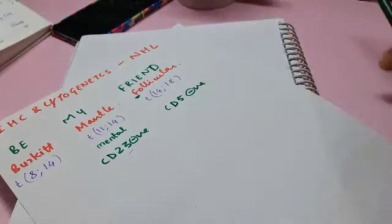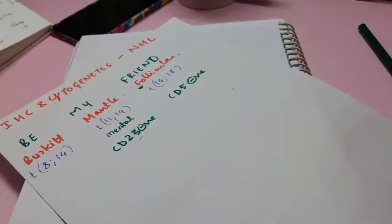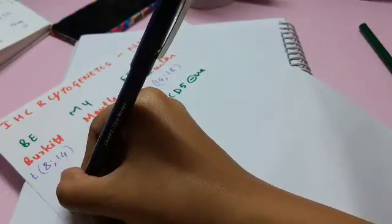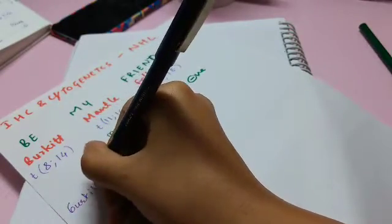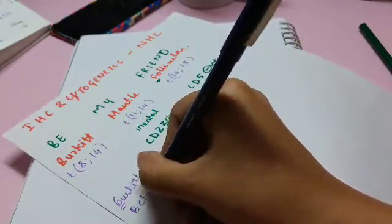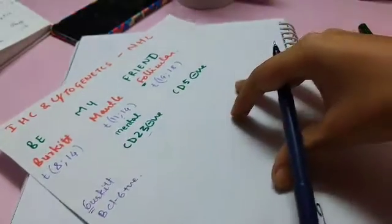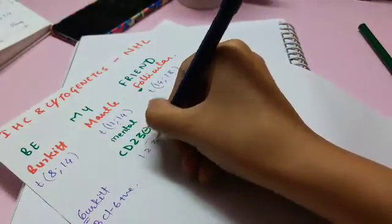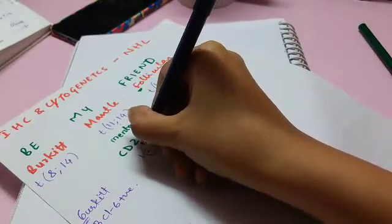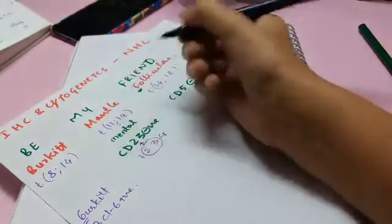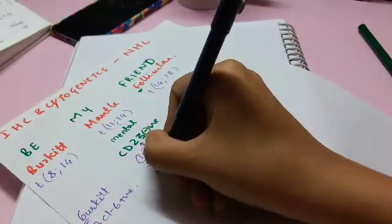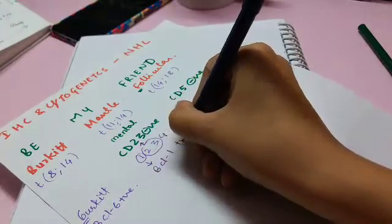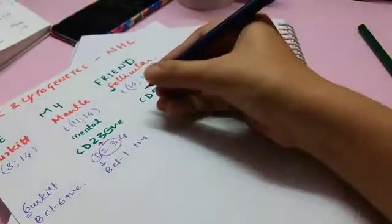Then comes a BCL marker for it. For the BCL markers you can think of Burkitt in a small cursive writing as B-U-R-K-I-T, so this B will help you remember it's BCL6 positive. And the mantle, it's a game of one, two, three, and four. The two and three are the CD23. The one and the four are in the translocations as well as this one will come down and it will become BCL1 positive. Then follicular is left with BCL2.